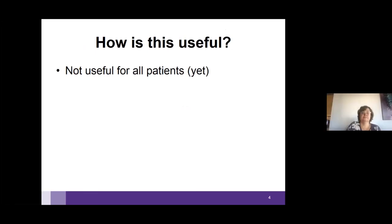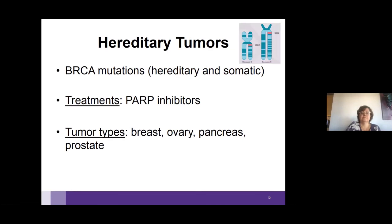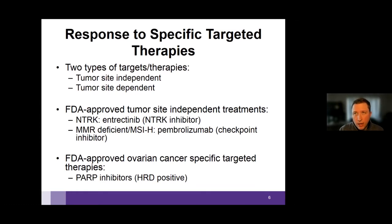Molecular testing isn't useful for everyone yet, but I think about it in terms of hereditary and hereditary-like tumors especially the BRCA-type pattern, response to new targeted therapies, chemotherapy sensitivity assays, and clinical trial enrollment. BRCA mutations—whether hereditary or somatic—make patients' tumors sensitive to PARP inhibitors, and we see this in other cancer types as well. Ovarian cancer has been leading the way in terms of treatment options for these targeted therapies.